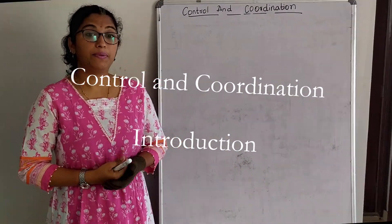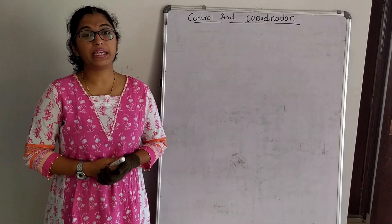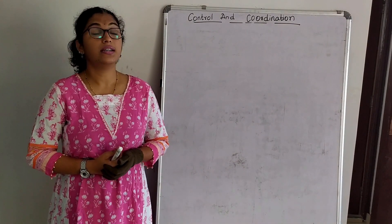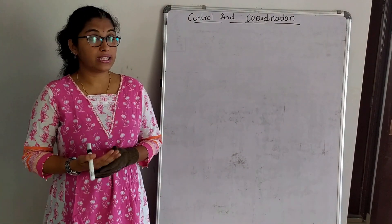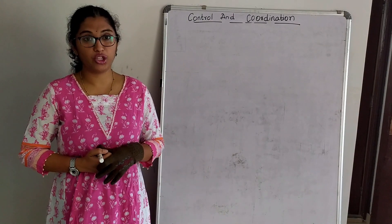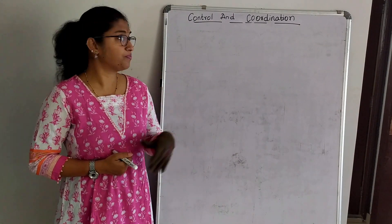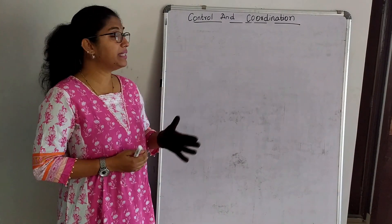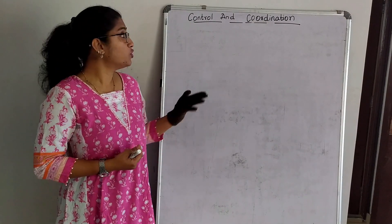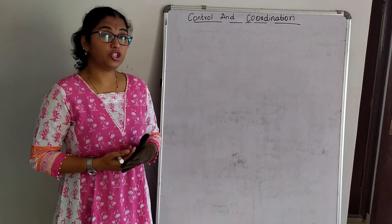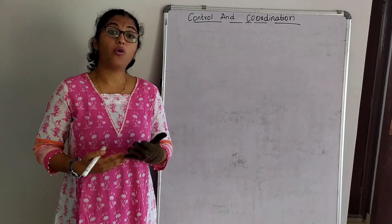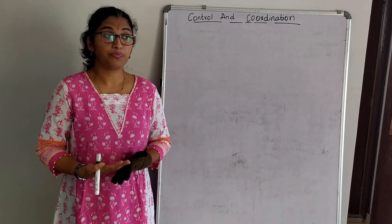Good morning. In our previous video we completed the chapter Life Processes. So in today's class we will start with the 7th chapter of biology: Control and Coordination. Control and coordination means how are we able to control and how are we able to coordinate.